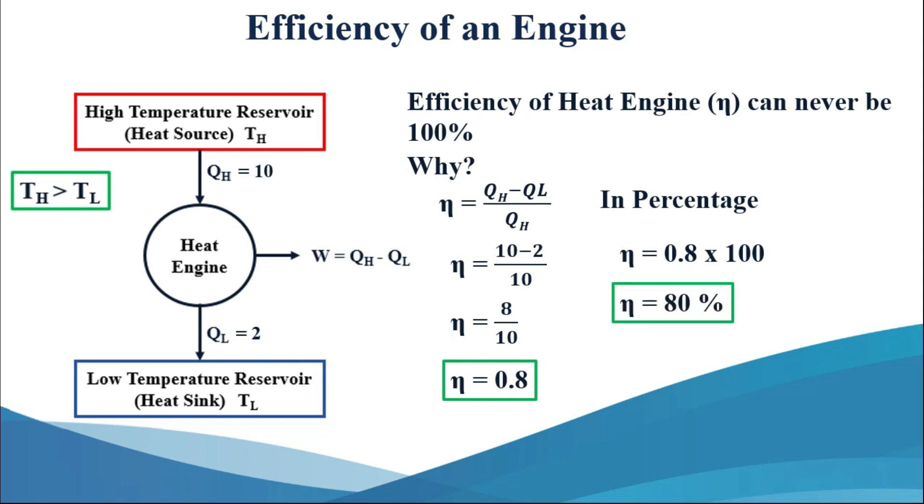Now the reason this efficiency can never be 100 percent, because this QL is a non-zero value and always positive, because of which the numerator will always be smaller than the denominator.